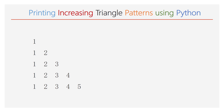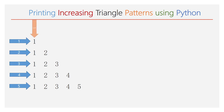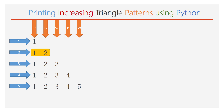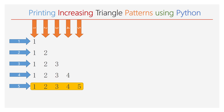Let us consider an increasing triangle that contains numbers in each line. Count the number of rows and the number of columns — the given pattern is 5 x 5. Observe clearly: in the first line we have only one number, in the second line there are 2 numbers, in the third line there are 3 numbers, in the fourth line 4 numbers, and in the fifth line 5 numbers.